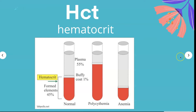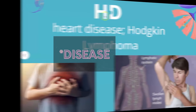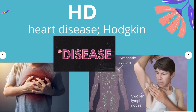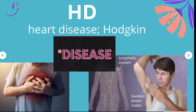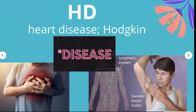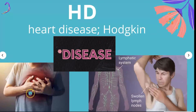A low hematocrit doesn't only indicate anemia; it can indicate other conditions as well. HD could stand for heart disease, which is the leading cause of death in the United States, causing about one in four deaths. You can greatly reduce your risk through lifestyle changes, and in some cases medication may be needed.